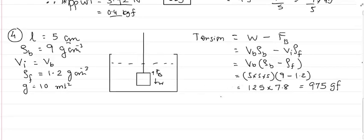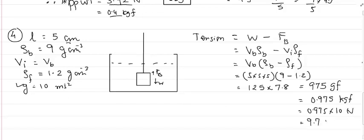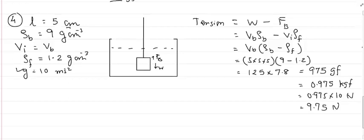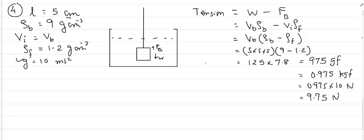To convert to Newton: 975 gf = 0.975 kgf, and 0.975 × 10 (since g = 10) = 9.75 Newton. This question illustrates how important it is to handle units carefully, which is why the unit summary was done before solving numericals.